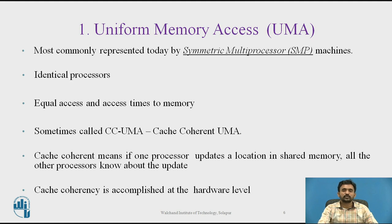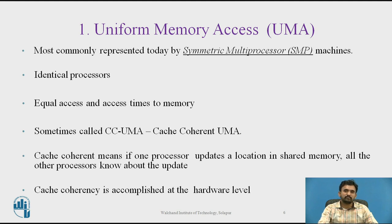The first shared memory model is Uniform Memory Access, also called UMA. The simplest multiprocessor system has a single bus connecting at least two CPUs and a memory. When a CPU wants to access a memory location, it checks if the bus is free, then sends the request to the memory interface module and waits until the requested data is available on the bus. UMA is most commonly represented today by symmetric multiprocessor machines where identical processors have equal access time to memory.